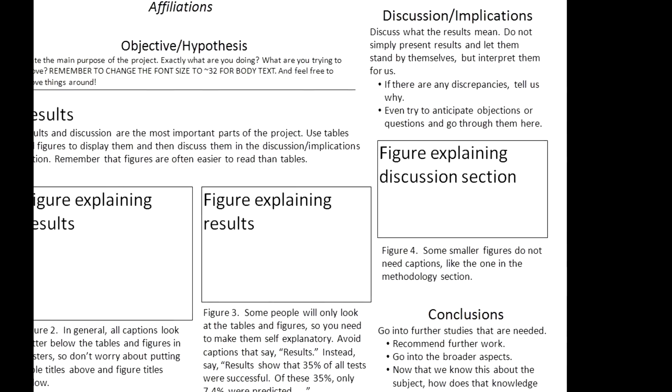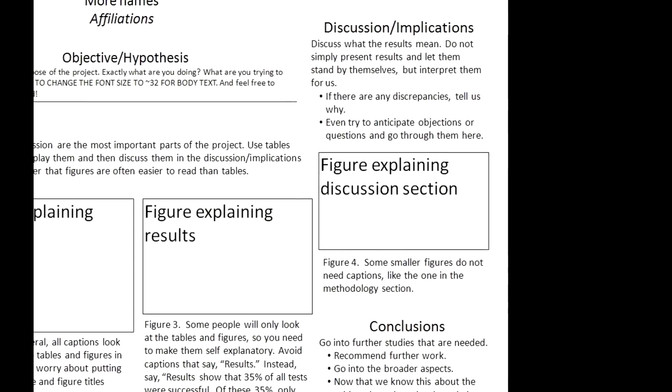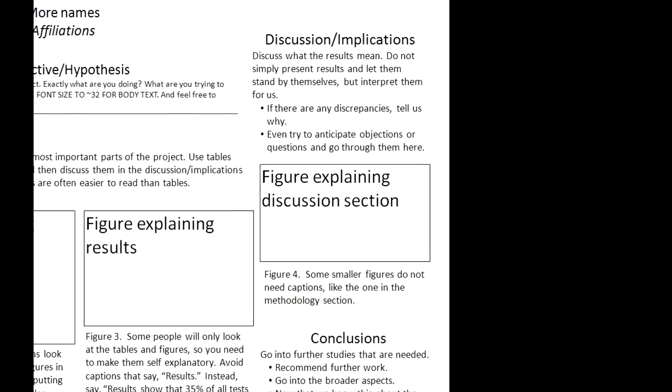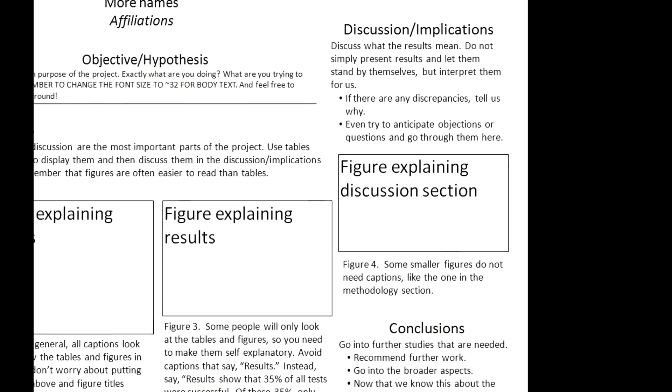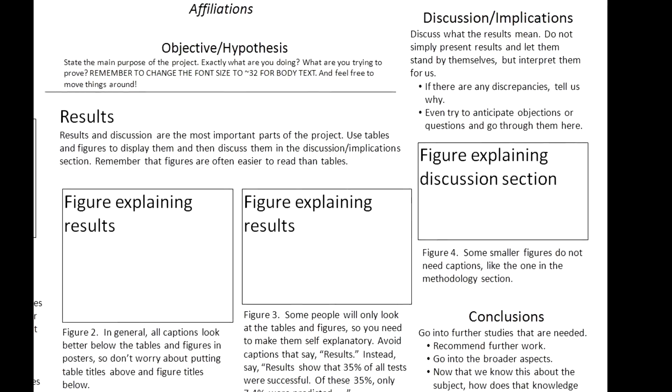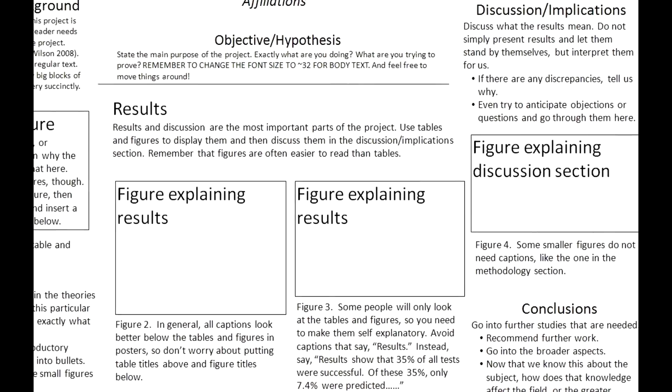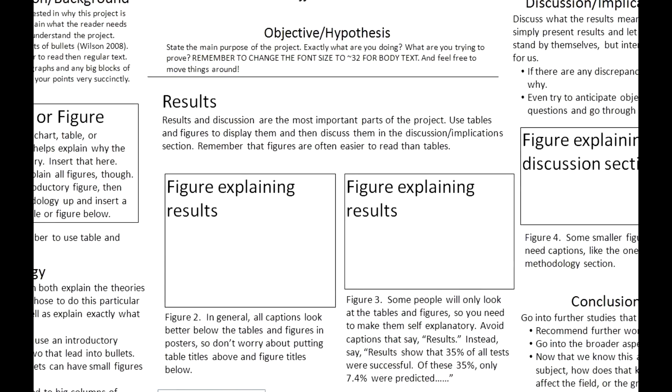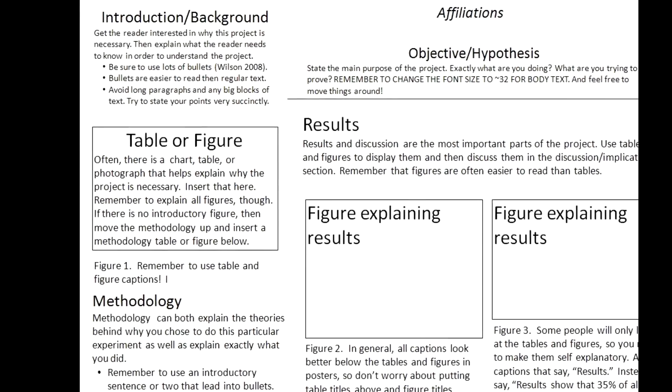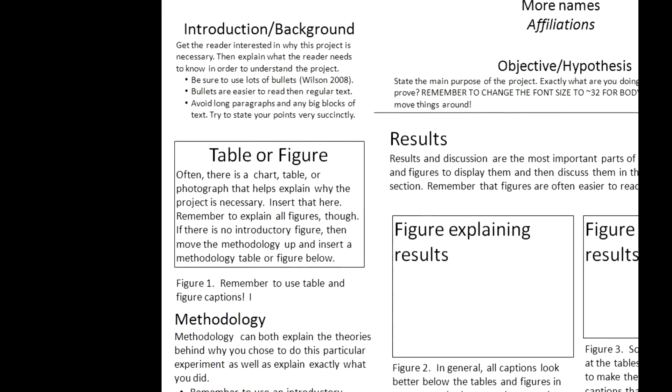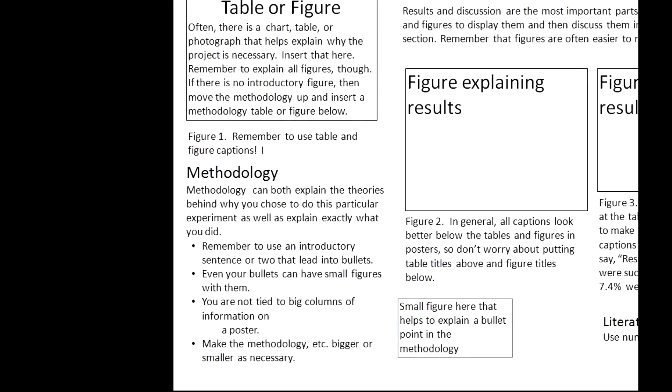We do sometimes expect results over on the right-hand side, but what we have over there is explanation of the results, such as the implications, the discussion of the results. What's going to take our attention are the results themselves. And notice what's right above it is the objective hypothesis. So we can skim that and just go down. And we know if we want more about the methodology or more background information, then we go to the left, because that's how we read. And if what we want are the implications, the discussion of the results, then we can go to the right.